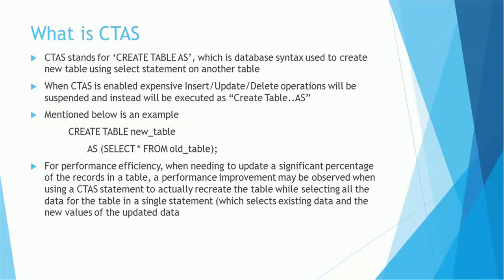For the strip table, if you have more records for which tokens need to be created, the update statement is a very costly operation. A performance improvement may be observed when using a CTAS statement to recreate the table while selecting all data in a single statement. Sometimes Create Table As is better compared to update — if you are updating a high volume of records, CTAS is always better. But if you are updating a low number of records, CTAS becomes more costly. So how to decide when to use Create Table As or when to use update — that is the configuration we tune for performance.